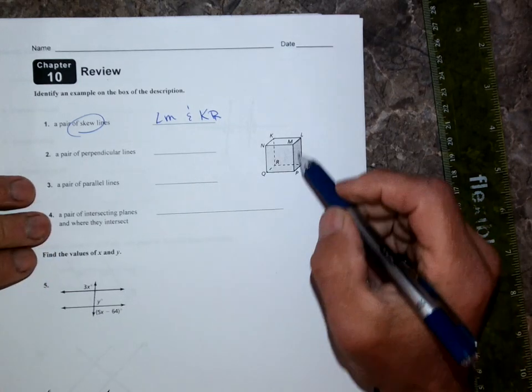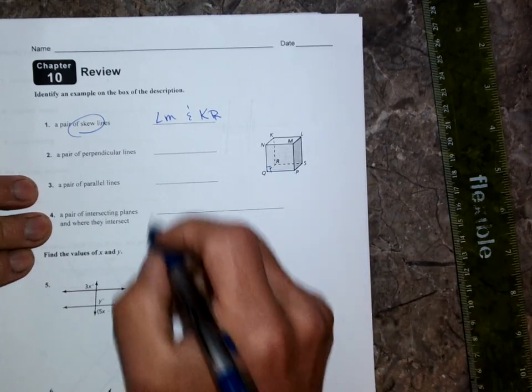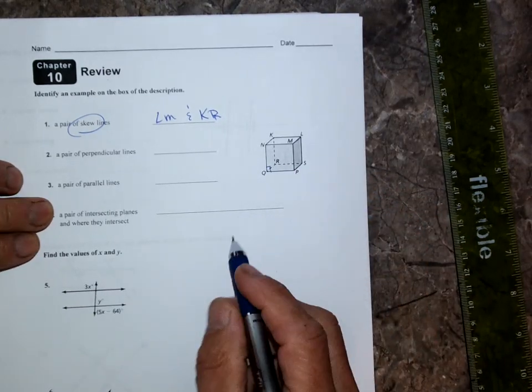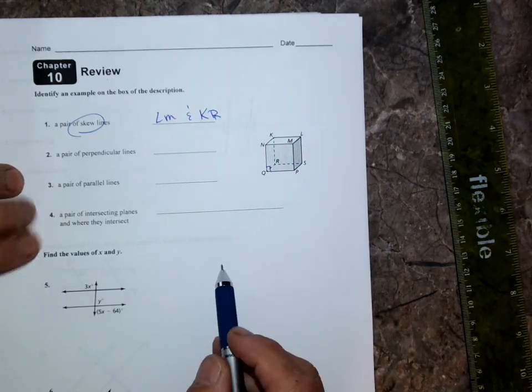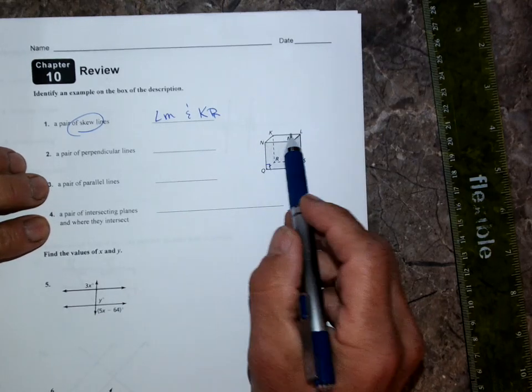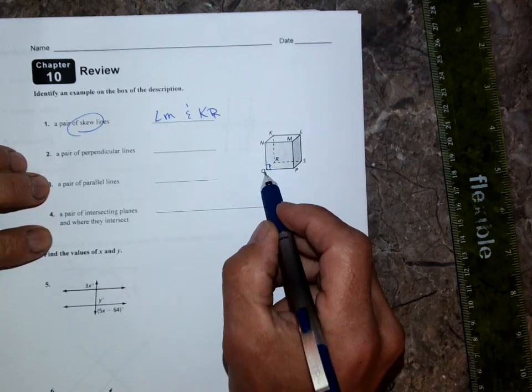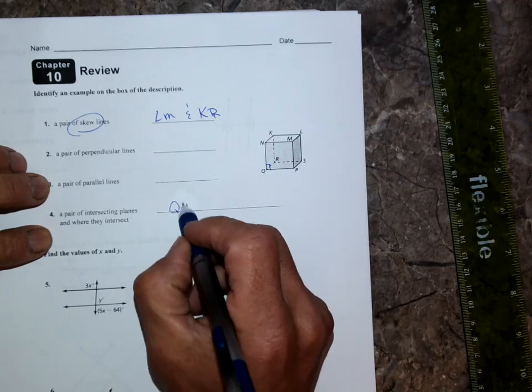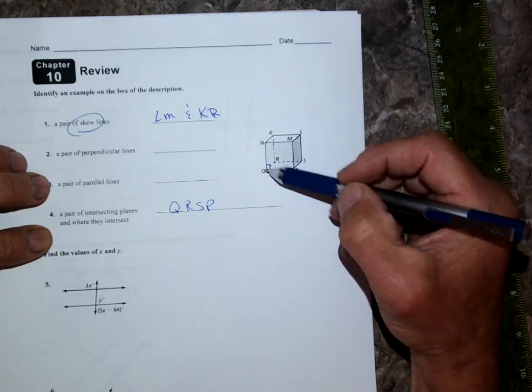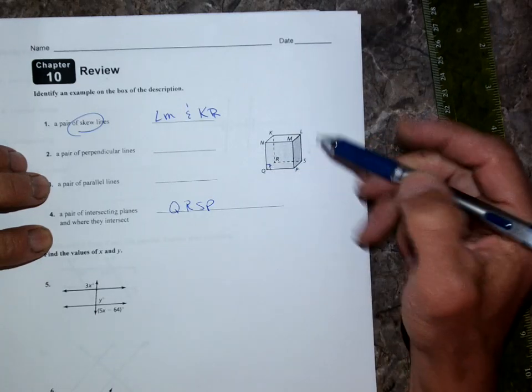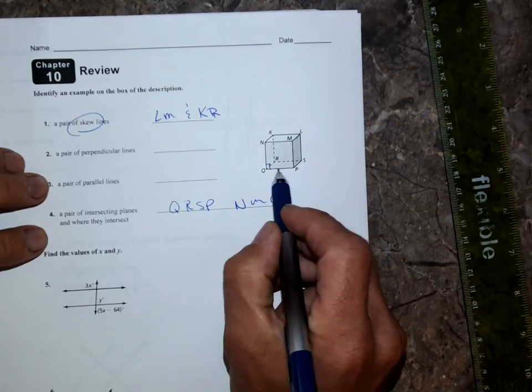Perpendicular lines—that's easy, probably NQ with QP. Parallel lines—you can have like these two are parallel. A pair of intersecting planes: the plane has to be the flat surface, so maybe QRSP intersects NMQP. They intersect right there.